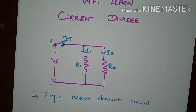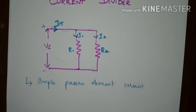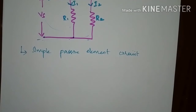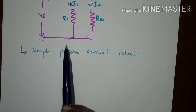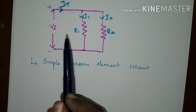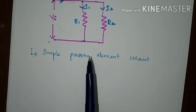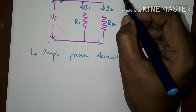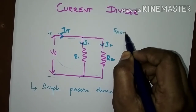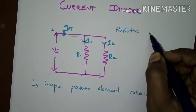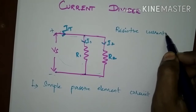We have already discussed about passive elements — check that video in the playlist. Passive elements are those that consume electrical energy or do not change the shape of the electrical energy passing through them. So this is a simple passive element circuit. This circuit is also termed a resistive current divider, since it is formed using resistances.